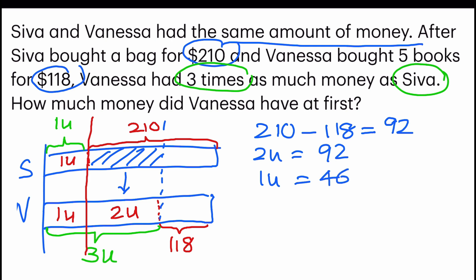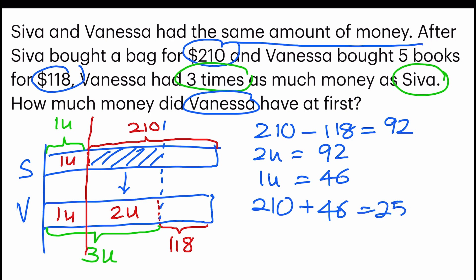The moment I found that, I can find out the money that Vanessa has. I can also find out Siva's amount, which is easier because it's one unit plus $210. So $210 plus $46 equals $256. And that's the final answer.